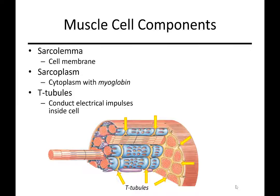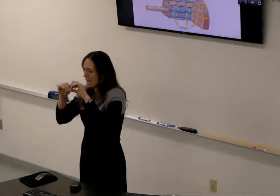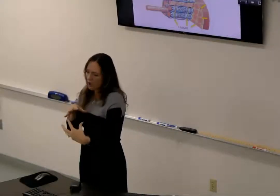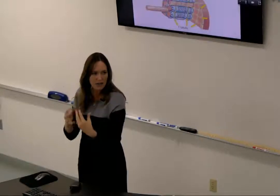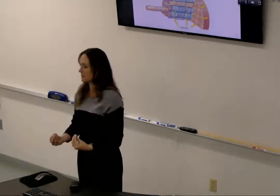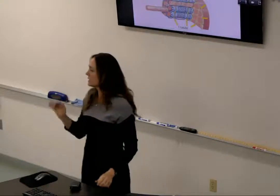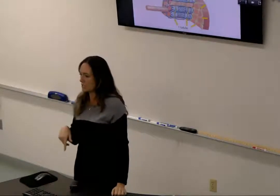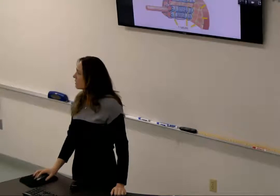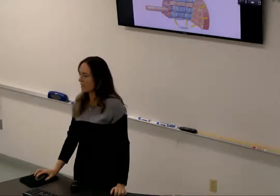The T-tubules are the electrical conduction system — like the interior wiring of the cell. That way, if a nerve stimulates a cell, it doesn't just do it to the outside. All the way deep in, all the parts are going to contract together. It's really important to get that stimulus to go through the entire muscle. So the T-tubules are the yellow things — they're conducting the signal to get going inside.